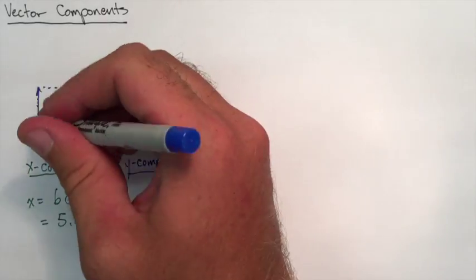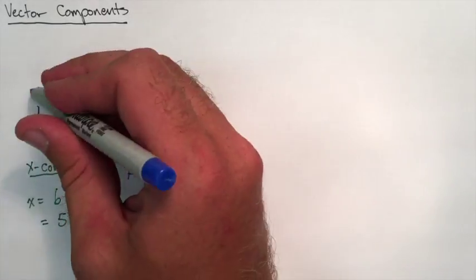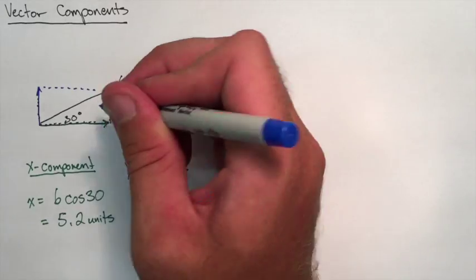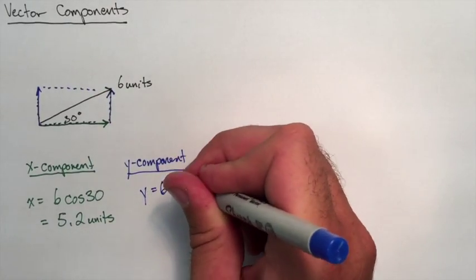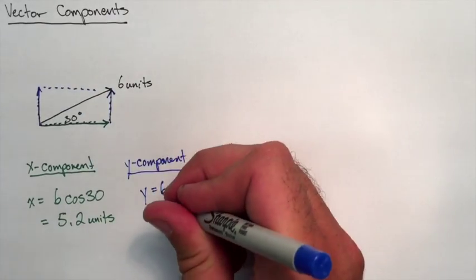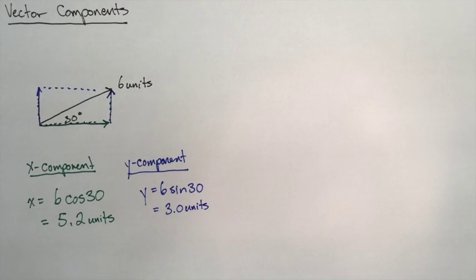The Y component, if we use it in reference to that angle, is going to be the opposite side of the 30 degrees. So we need to use sine. Y equals 6 sin 30, which is 3 units.